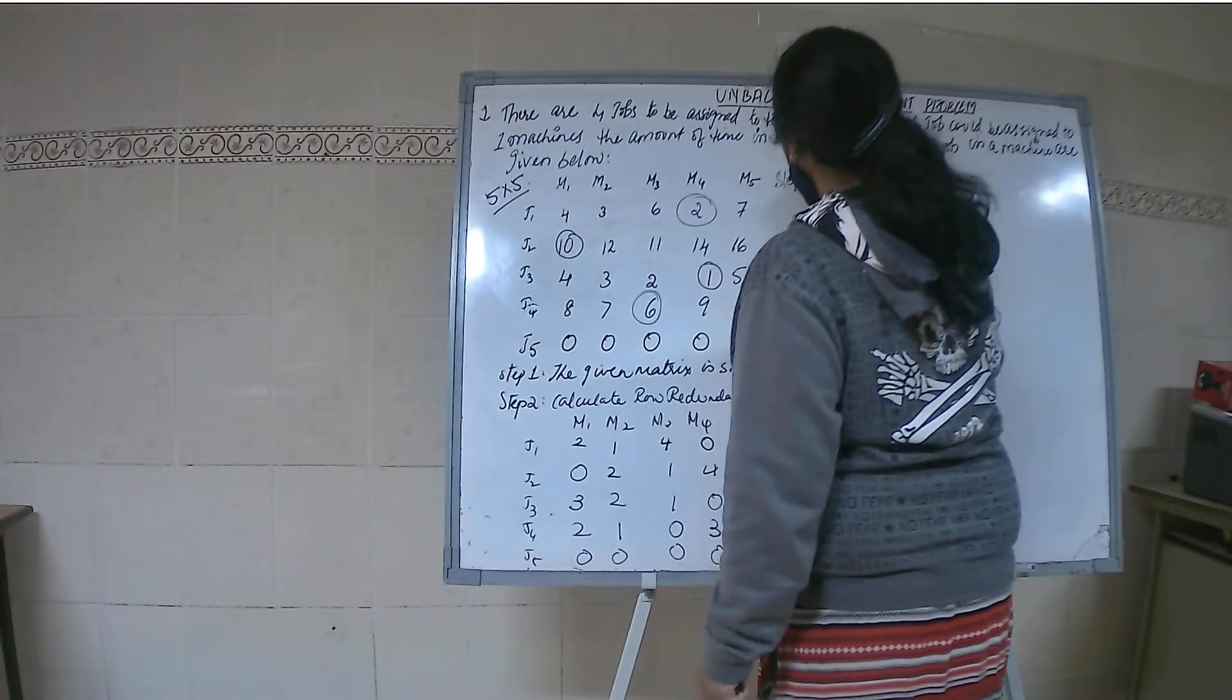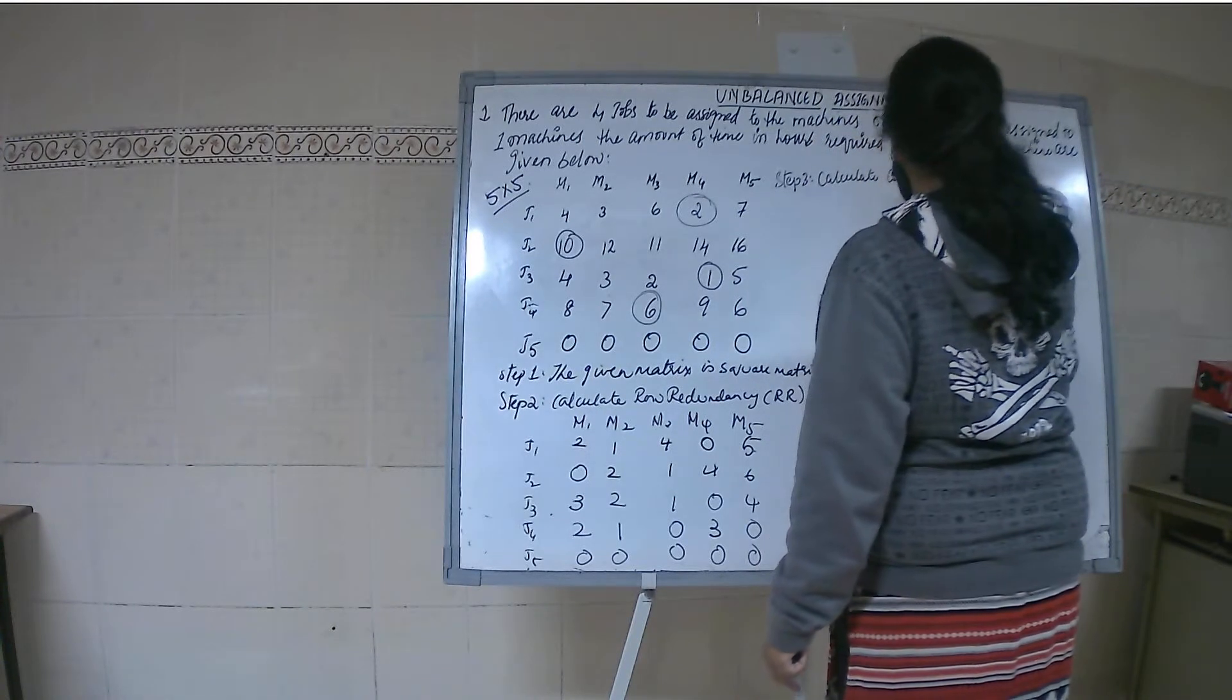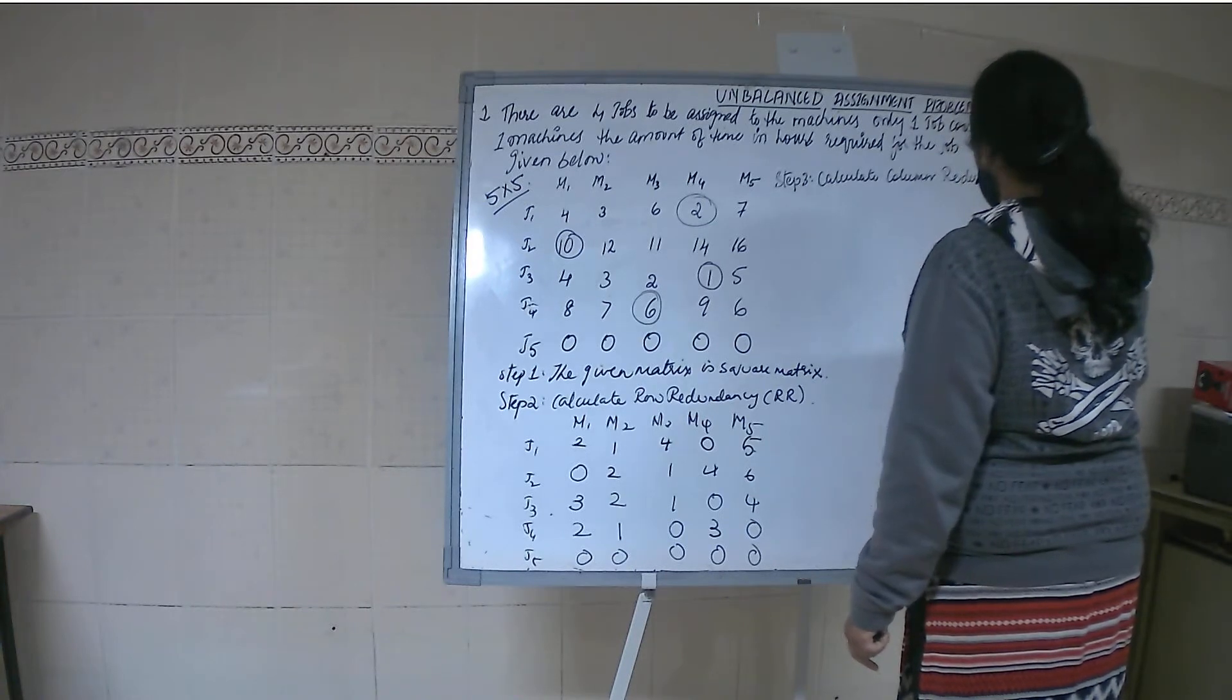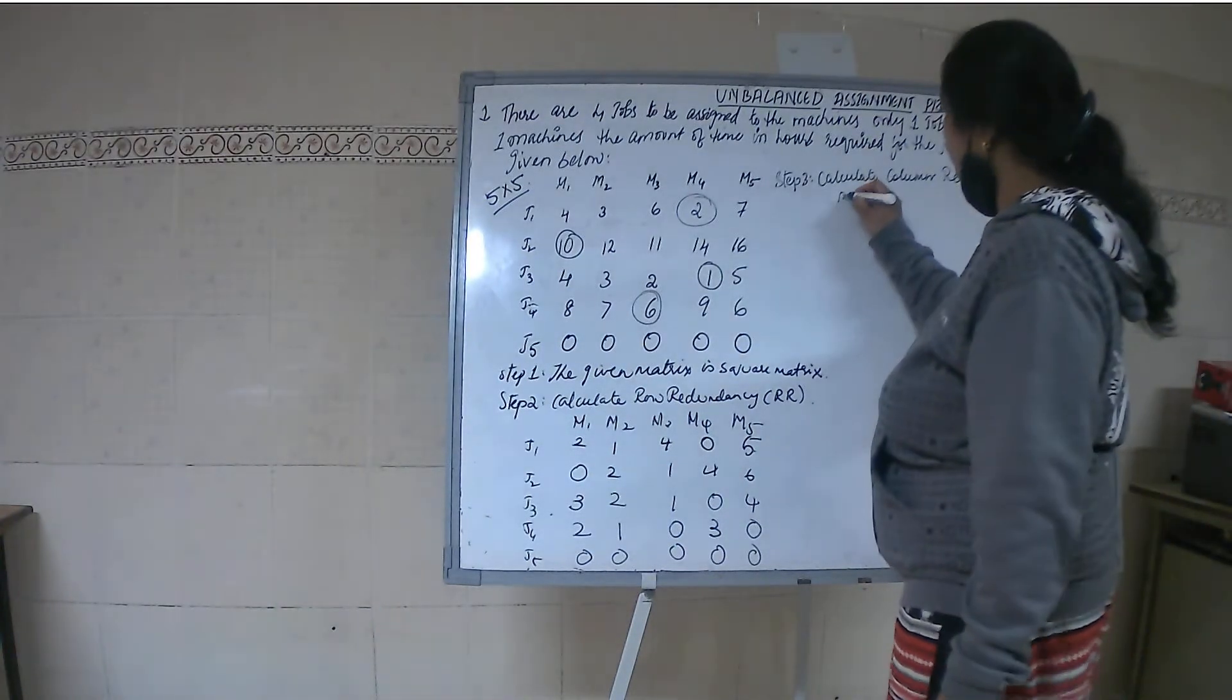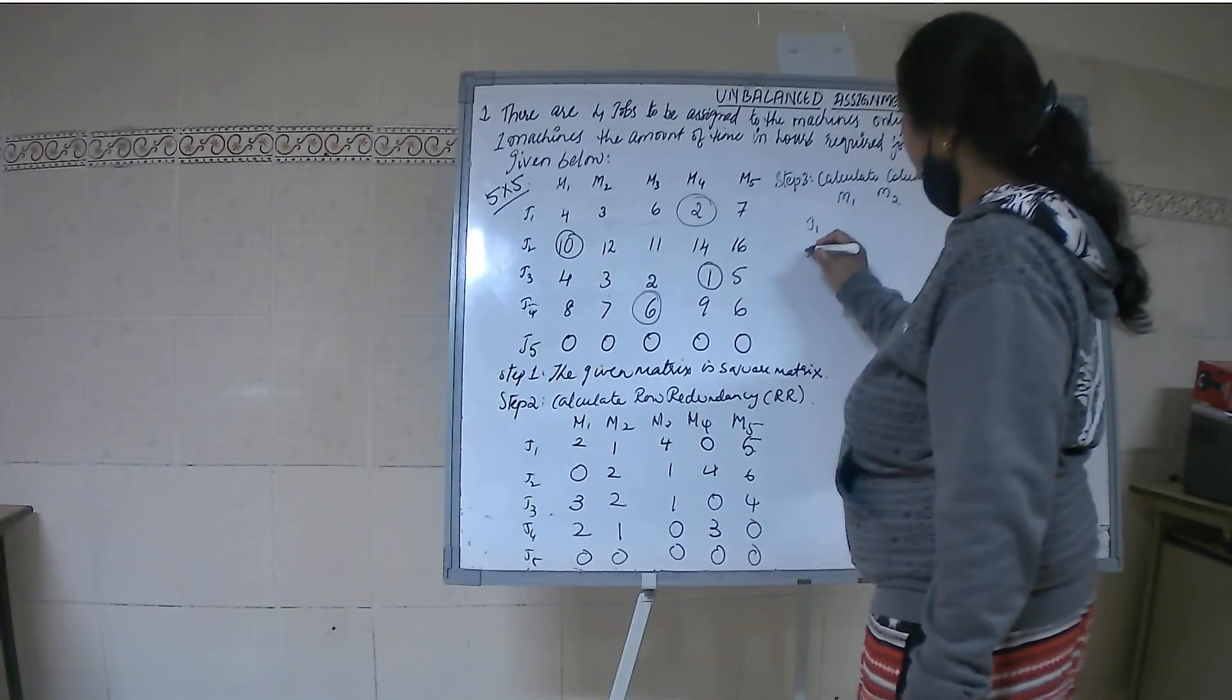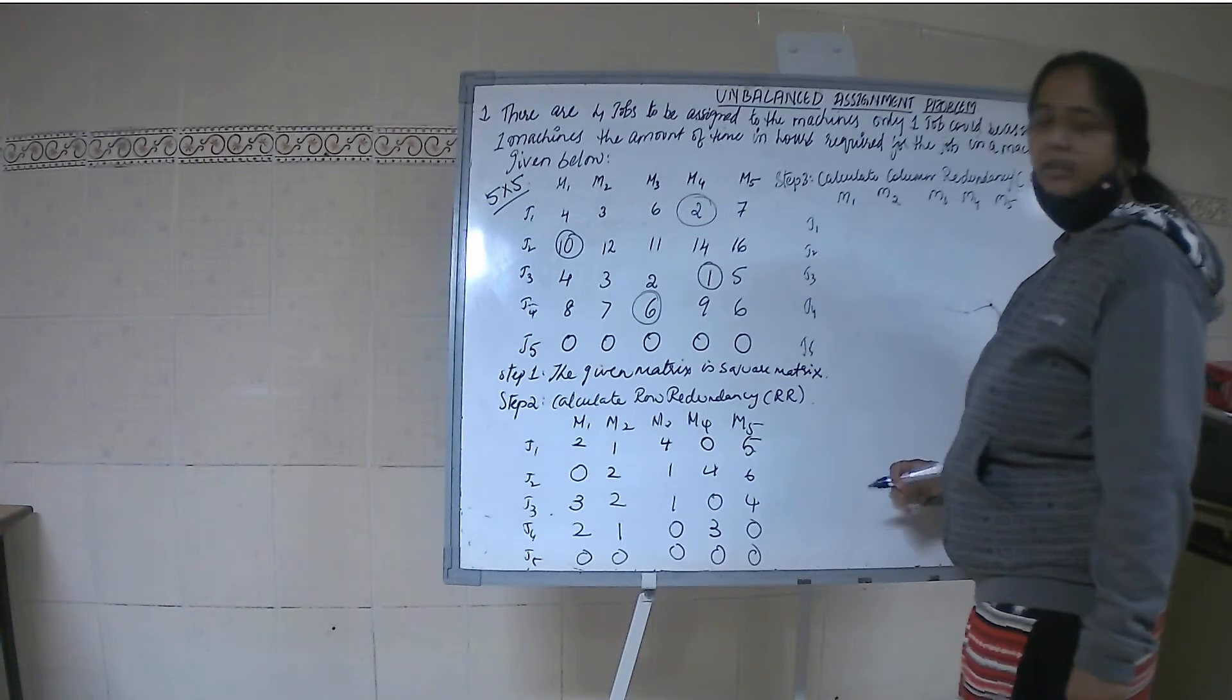Step 3: Calculate column redundancy. Same values you will get because every column has zeros, the same table will repeat. M1, M2, M3, M4, M5 and J1, J2, J3, J4, J5.